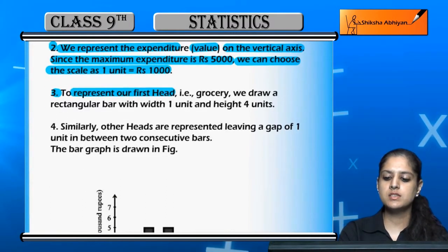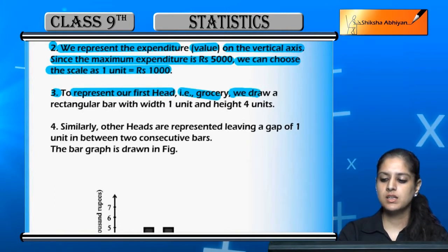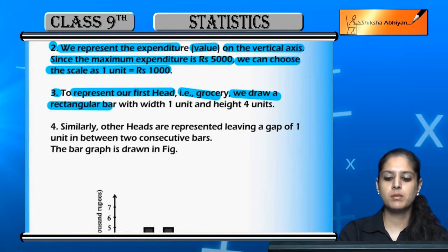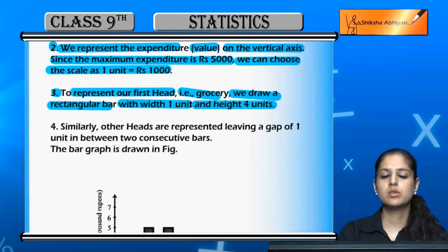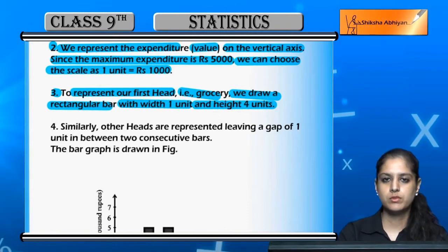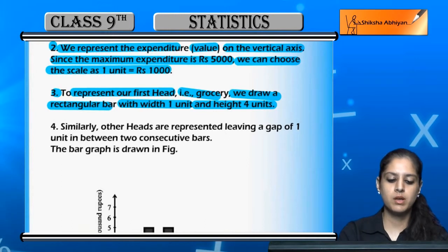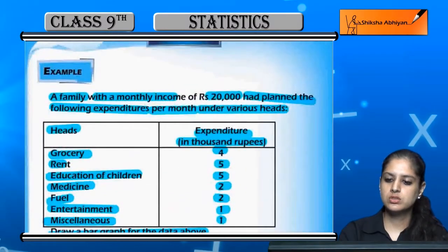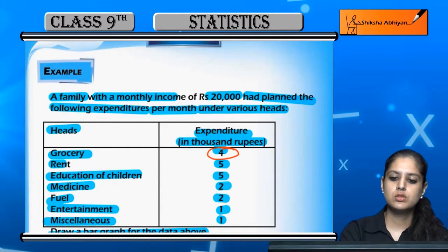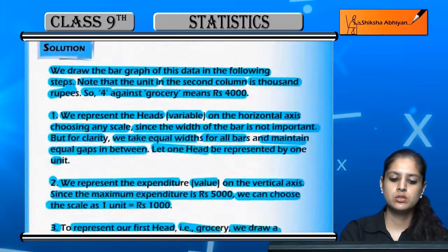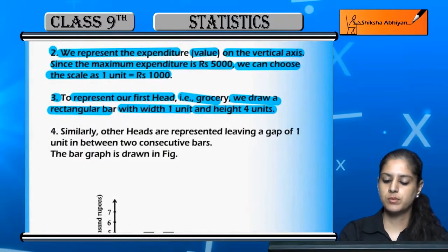We will take the y-axis because the maximum value is 5,000, so we can take the scale as 1,000 units easily. Third, we represent the first head, which is grocery. We create a rectangular bar of width 1 unit and height 4 units, because its value is 4,000 rupees.